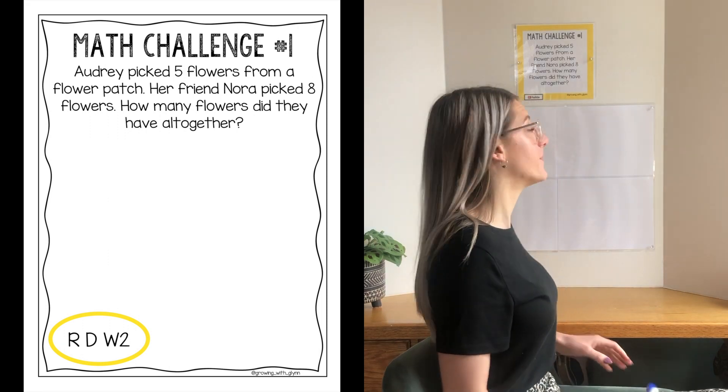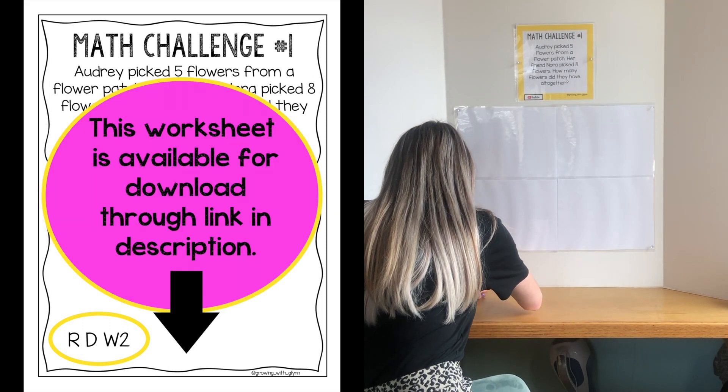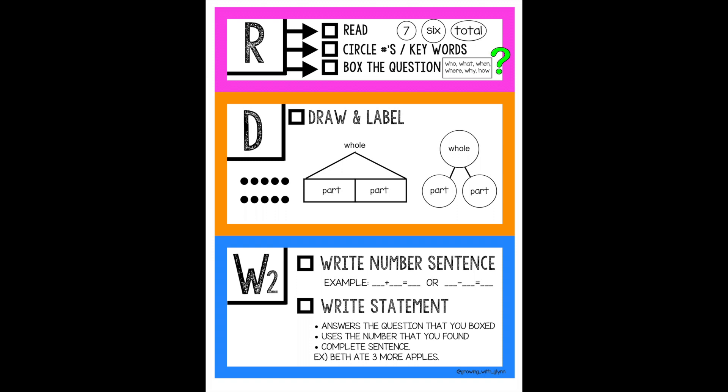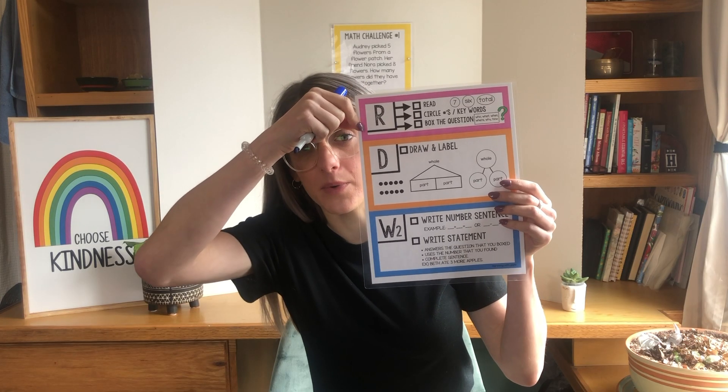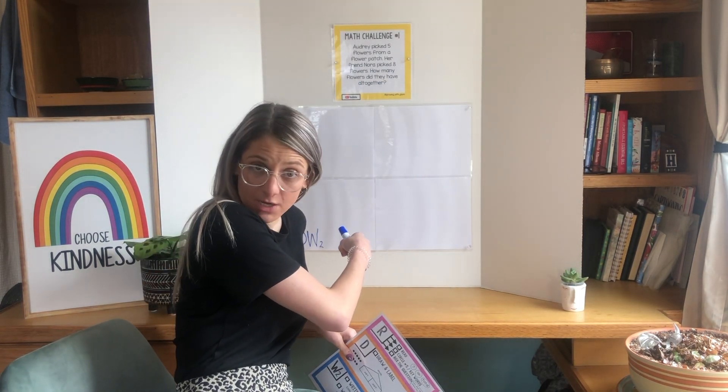The first thing we do when we see a math word problem is we write our cheat sheet at the bottom of our page, and that is R-D-W-2. When I solve math problems, I like to use this little cheat sheet to help make all the steps and all the directions with pictures and examples in case I get confused. When we work through our math problem, we're going to cross out each letter as we're done with it.